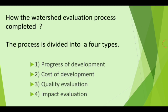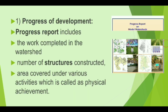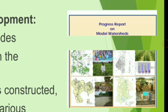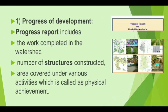Number one is progress of development. This is understood by means of a progress report. The progress report includes the work completed in the watershed. From that report, we understand how many structures are constructed and how much area is covered under various activities like check weir, check dam, CCT, or other treatments.